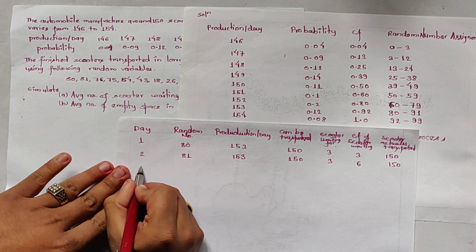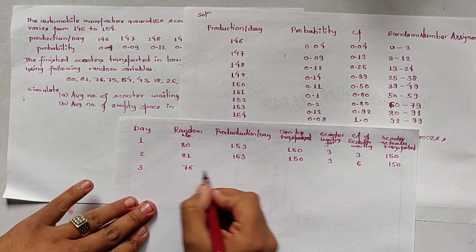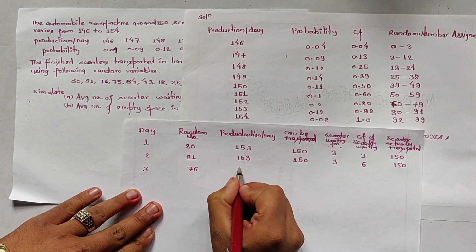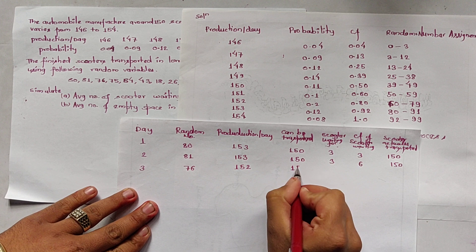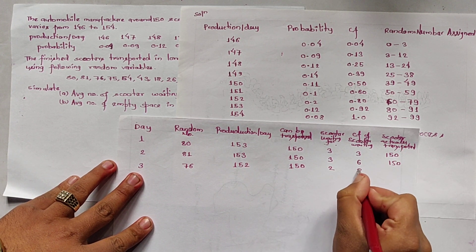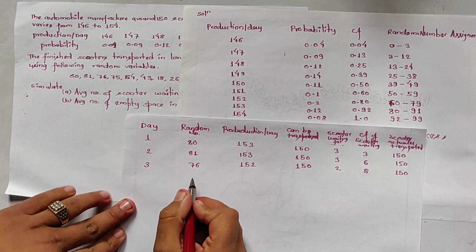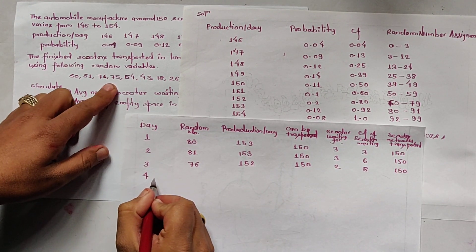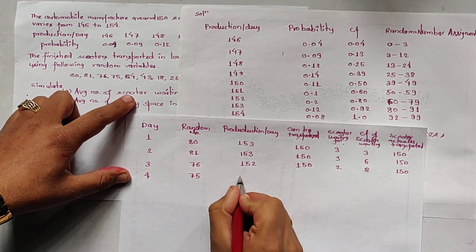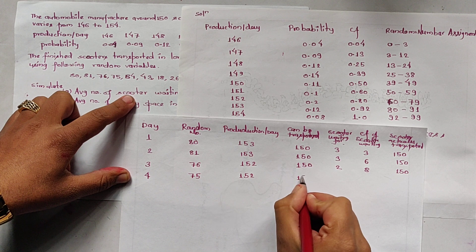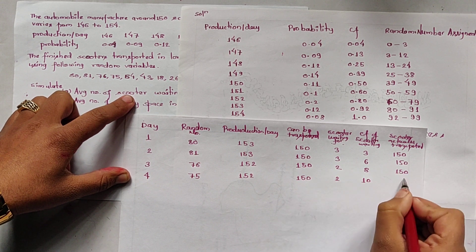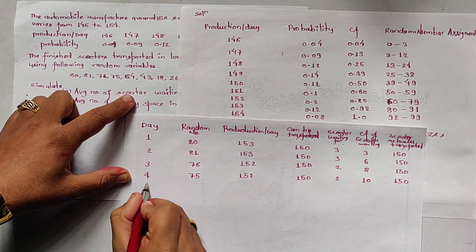Day 3: random number is 76. 76 lies in the range 60 to 79, so production is 152. 150 is transferred, waiting is 2, cumulative waiting is 8, actually transferred is 150. Day 4: random number is 75. 75 also lies in that range, so production is again 152. Waiting is 2, cumulative waiting is 10, actually transferred is 150.